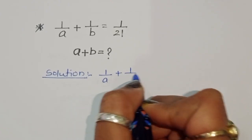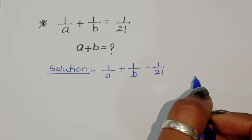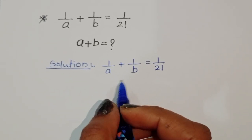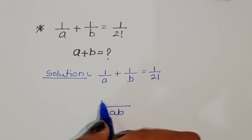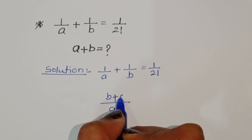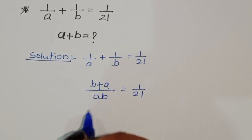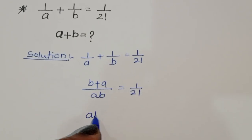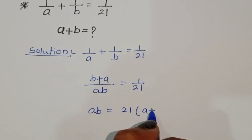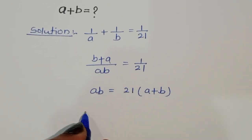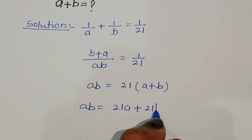1 upon a plus 1 upon b is equal to 1 upon 21. We can take LCM here as ab. So a is cancelled and it becomes b plus a over ab is equal to 1 upon 21. After cross multiplication: ab is equal to 21 times a plus b, so ab is equal to 21a plus 21b.